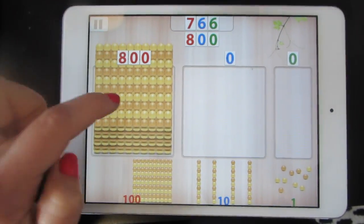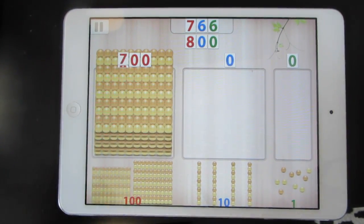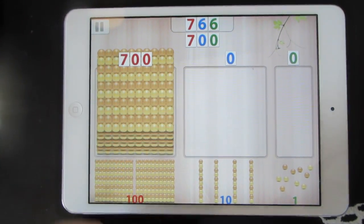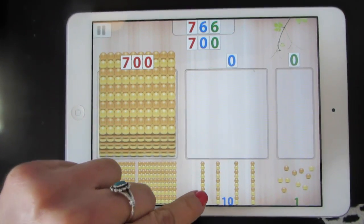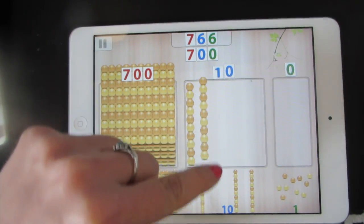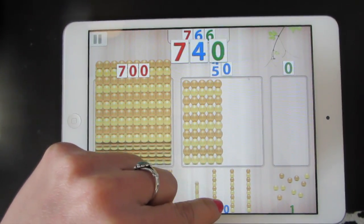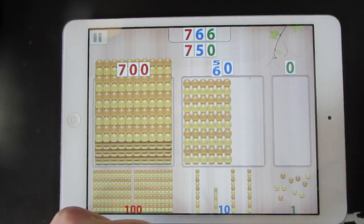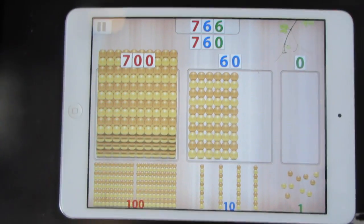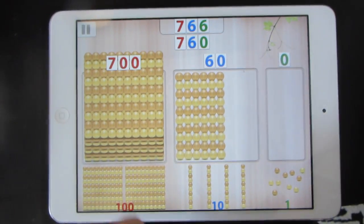Now, oops, too many. Now we'll make the six in the tens place by dragging in 60. Now we'll make the six in the ones place.